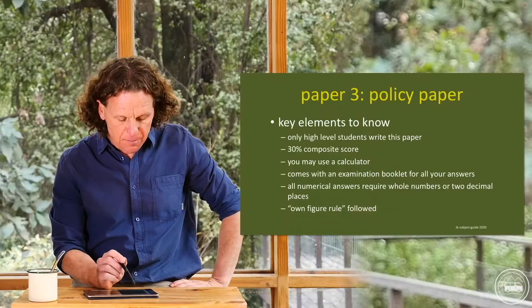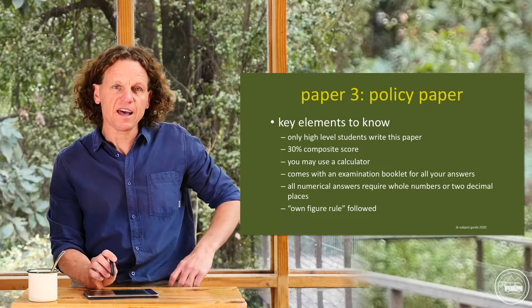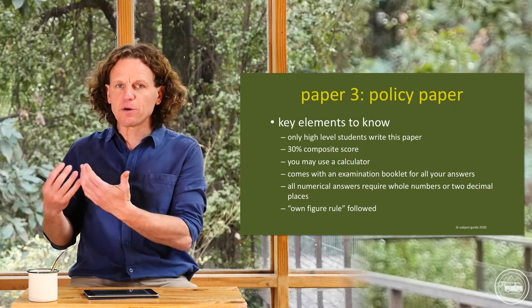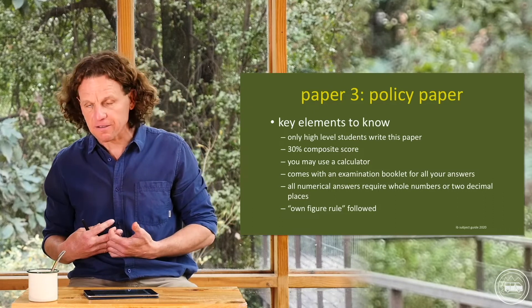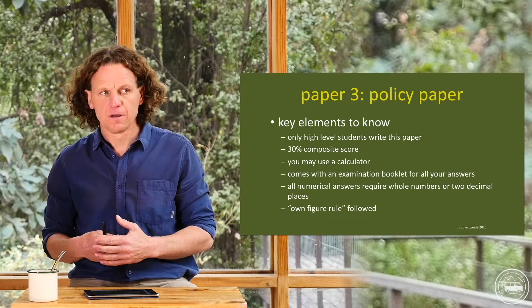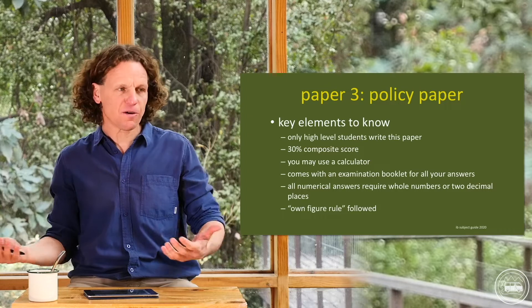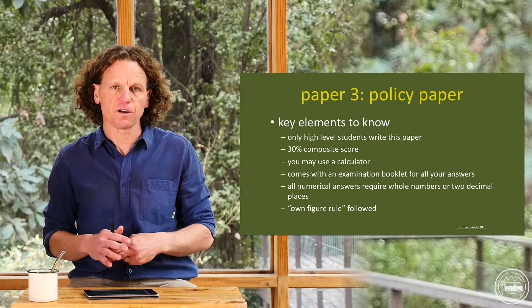Paper 3 is a policy paper, which means that in the end you are going to recommend, as an economist, what sorts of government policies should be put in place as a result of the information you have been given and the answers you've been given in the earlier part of the question. Own it, make a recommendation like they do in real life. Economists work for governments — they look at real life situations like unemployment rates, inflation rates, trade, taxes on certain products, and then they give a policy recommendation to politicians and government officials about how to manage the economy. And that's what you're being asked to do.